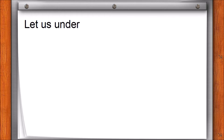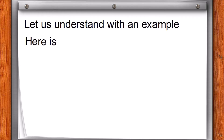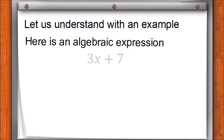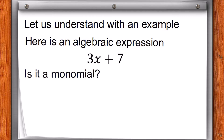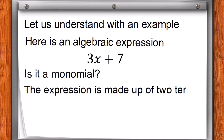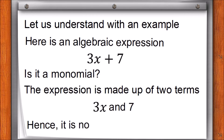Let us understand with an example. Here is an algebraic expression: 3x plus 7. Is it a monomial? The expression is made up of two terms: 3x and 7. Hence, it is not a monomial.